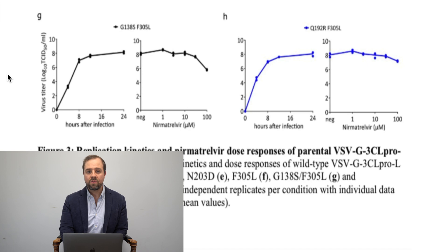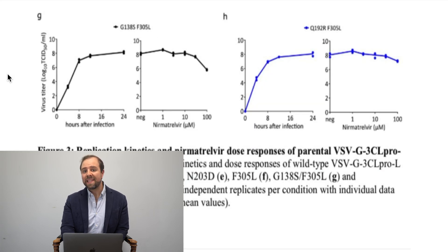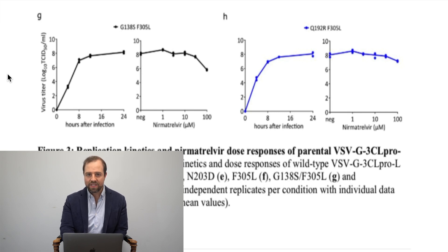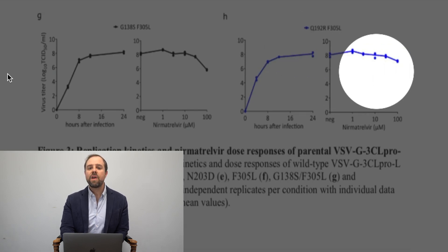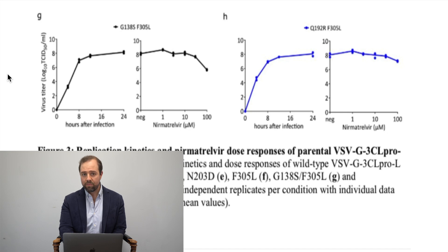Looking at Image G and H: Image G, otherwise known as mutant G138SF305L, was resistant to Paxlivid's main drug, a protease inhibitor. If the drug was effective, that line would have decreased substantially from left to right — but it didn't. The line stayed straight, meaning after the drug was exposed to the mutated viruses, the viral titers did not decrease. The same was true with another mutant brought on by overexposure to Nermotrelivir, Paxlivid's main protease inhibitor.